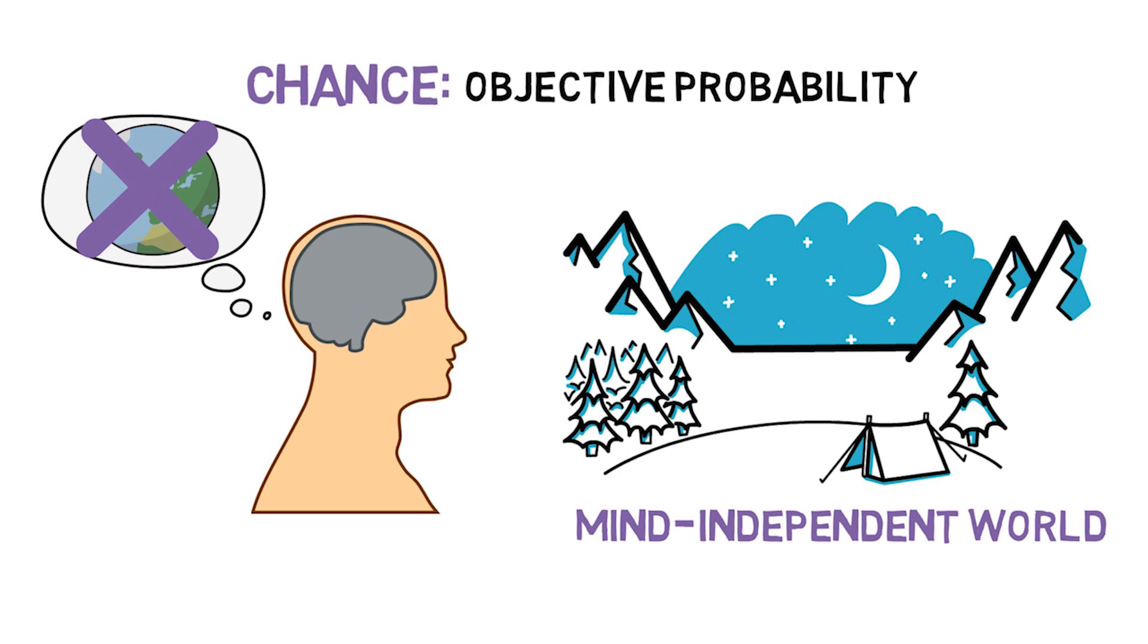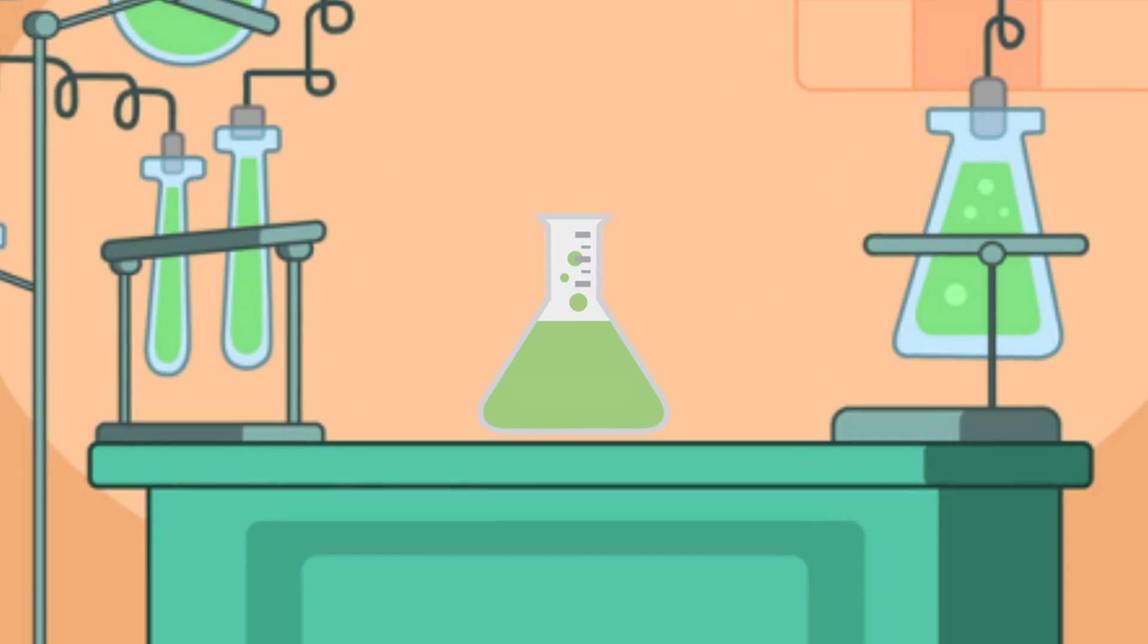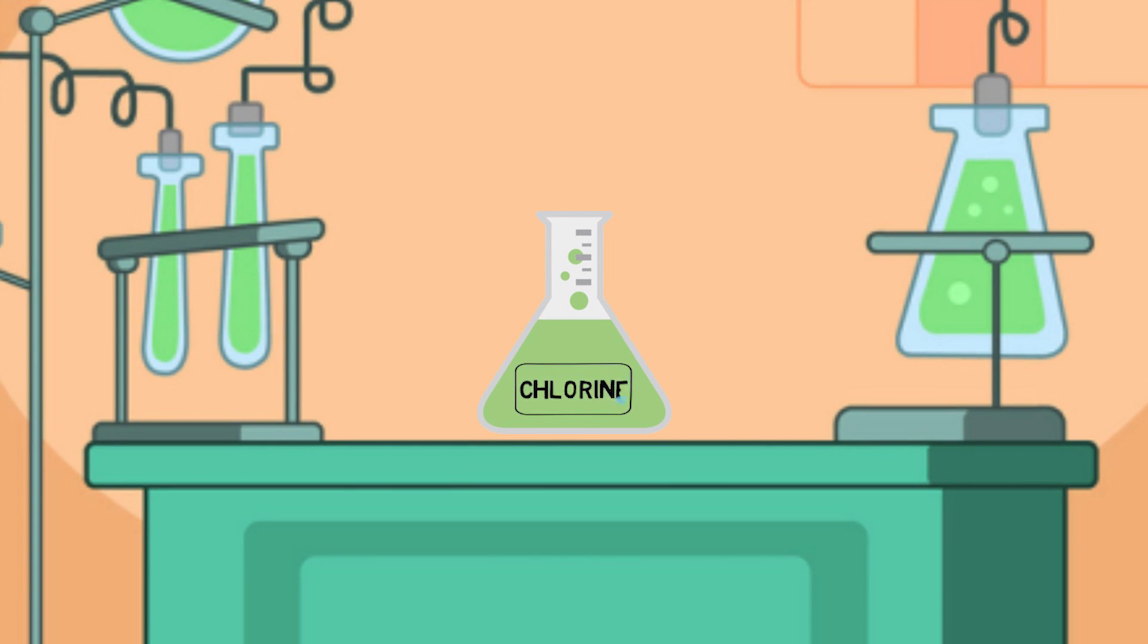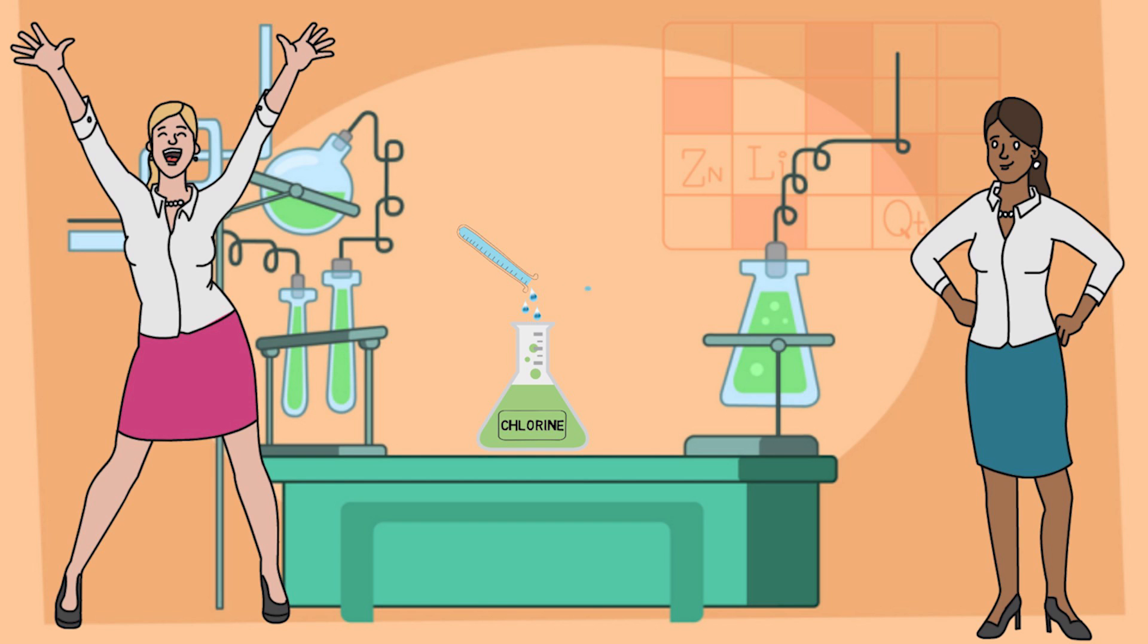In order to convince yourself that there is more than one type of probability, consider the following case. Carmen is a chemist. She's performing an experiment in her lab that requires her to mix chlorine and water. She knows that the probability of an explosion occurring when she mixes chlorine and water is basically zero. What she doesn't know is that Sarah has snuck into her lab and put a label that says chlorine on a bottle of potassium, and when potassium is mixed with water, it is very likely to explode.